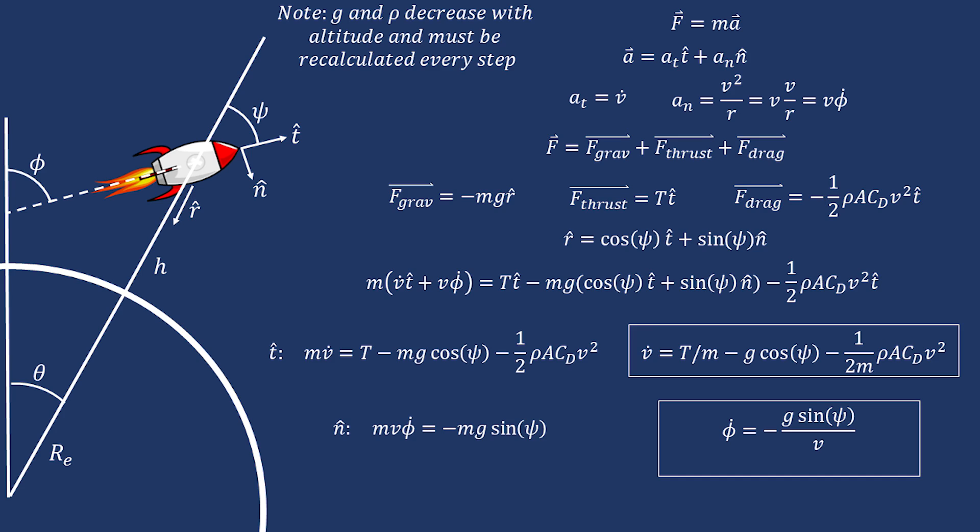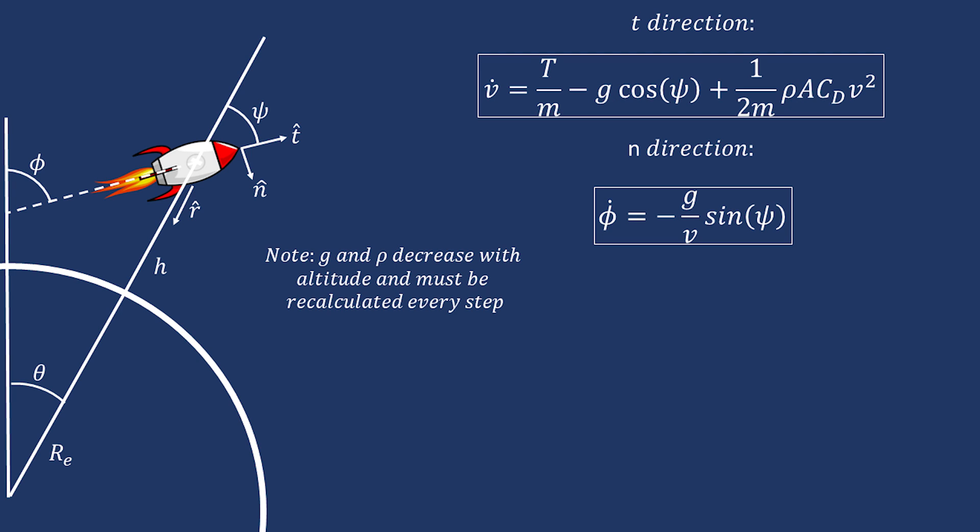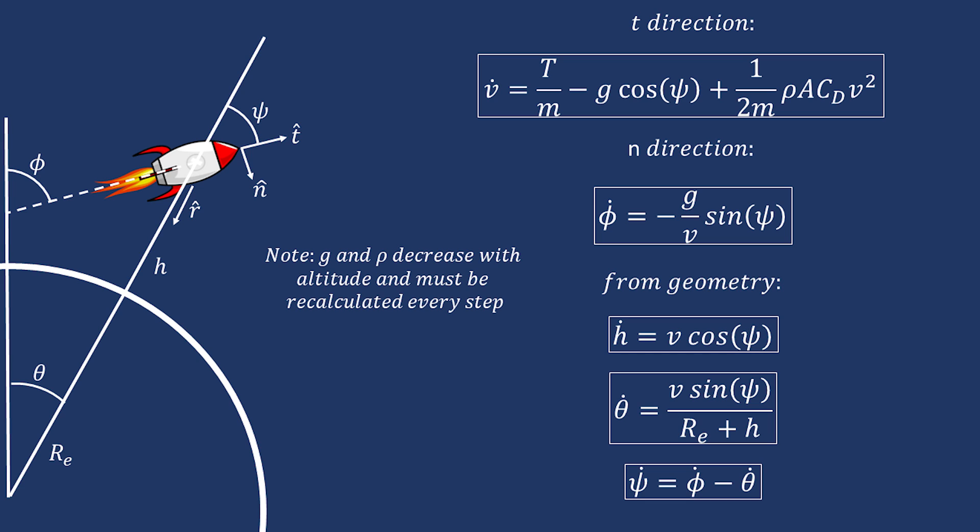Basically we have five equations. Two of them are derived directly from the f = ma math, splitting the vector up into the t and n directions. This first one gives v dot, or acceleration along the trajectory, and this other one gives phi dot, the rate of change of the angle of the rocket, measured with respect to the launch pad vertical. The other three equations are derived by inspection of the geometry that we set up, and give us h dot, theta dot, and psi dot. Okay, let's finally jump over to the code.